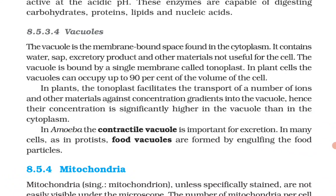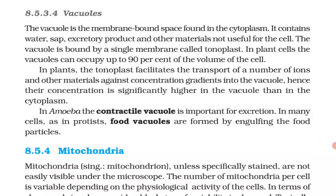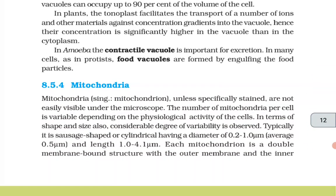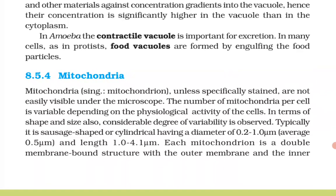Vacuoles: the vacuole is a membrane-bound space found in the cytoplasm. It contains water, sap, excretory products, and other materials not useful for the cell. The vacuole is bound by a single membrane called tonoplast. In plant cells, vacuoles can occupy up to 90 percent of the volume of the cell. The tonoplast facilitates transport of a number of ions and other materials against the concentration gradient into the vacuole, hence their concentration is significantly higher in the vacuole than in the cytoplasm. In amoeba, the contractile vacuole is important for excretion; in many cells food vacuoles are formed by engulfing food particles.